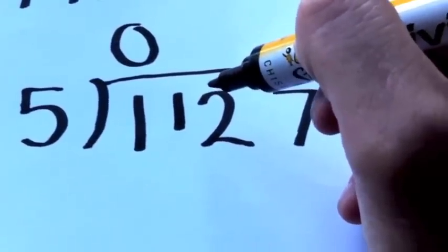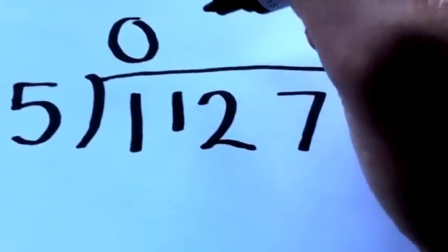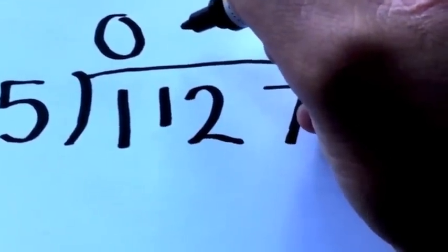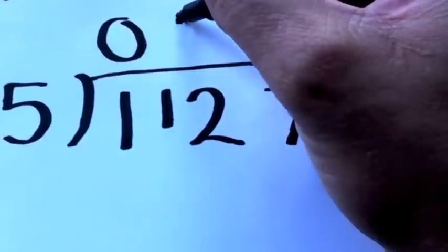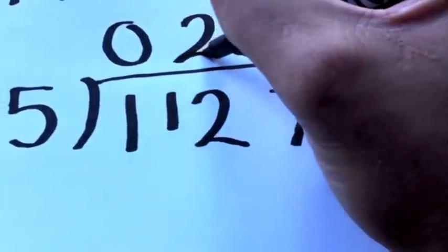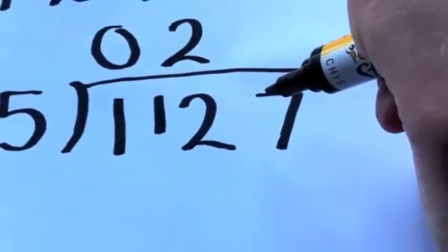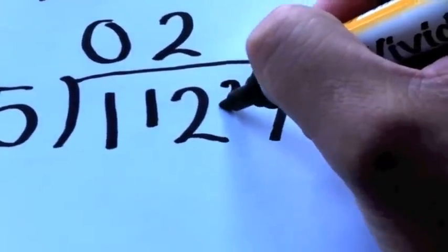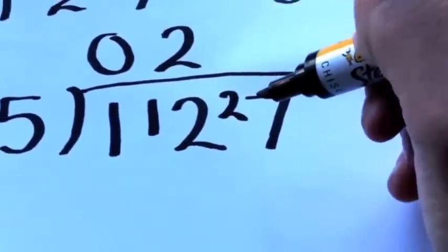So next, let's figure out how many 5s go into 12. 5 times 2 is 10, that's the closest you can get, so obviously it goes in 2 times with a remainder of 2. 5 times 2 is 10. Here, bring your remainder over again in front of your 7.